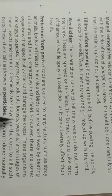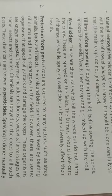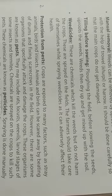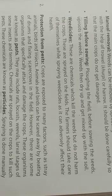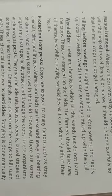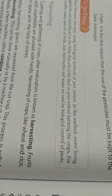Pests may include rats, locusts, larval stages of some insects, and termites. Chemicals are sprayed on the crops to kill such pests — these chemicals are known as pesticides. Chemical spraying is done manually or by small aircraft. These chemicals stick to the fruits and vegetables and are also absorbed by the plant, and can therefore become part of the food chain.